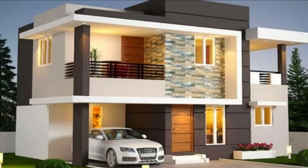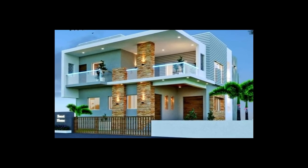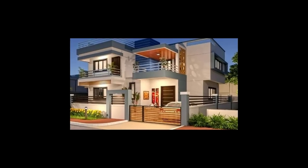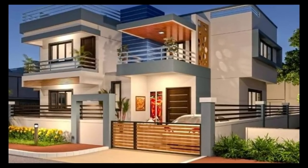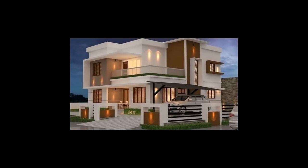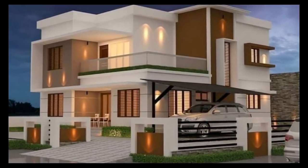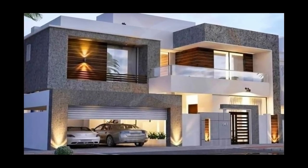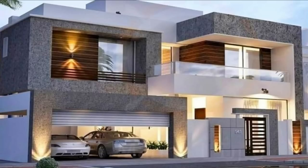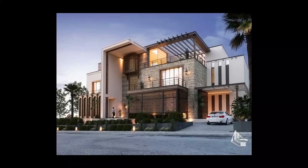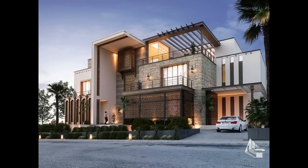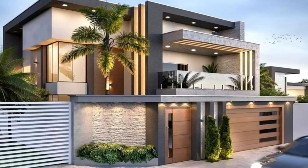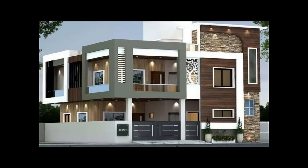Modern houses in this case don't necessarily refer only to ones that look new and trendy, but also to those that are technology-driven. They include sustainable homes that are friendly to the ecosystem and contribute the least wastage of resources. These modern homes take advantage of natural lighting, and hence the house elevation design involves the liberal use of glass. The elevation design of modern houses is quintessentially simple, with straight lines, a minimalist design approach, large glass windows, and ample open spaces for fresh air.